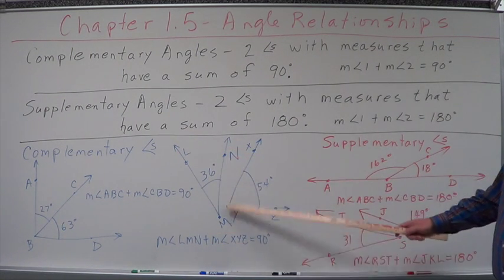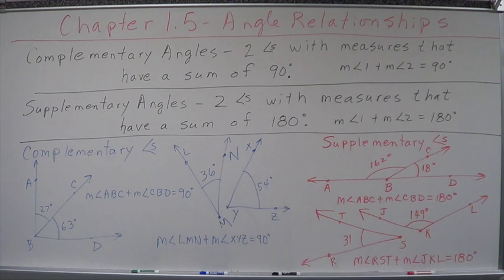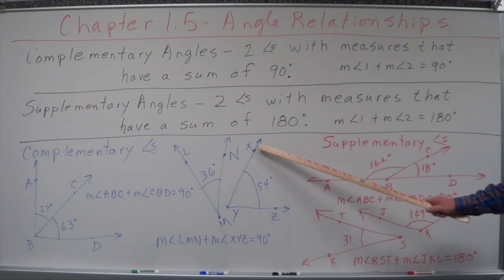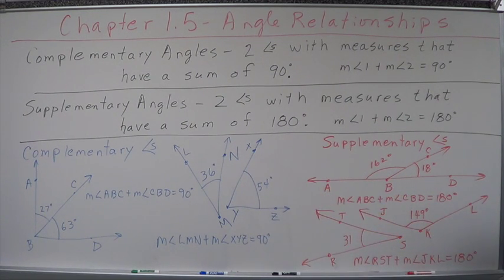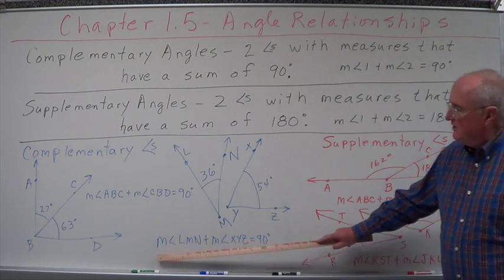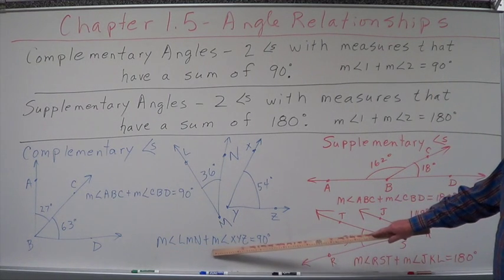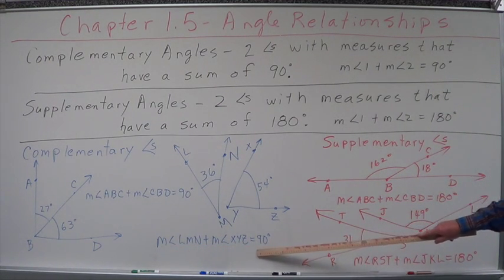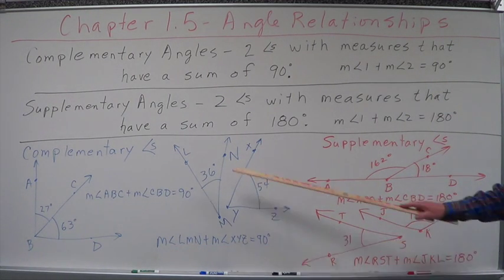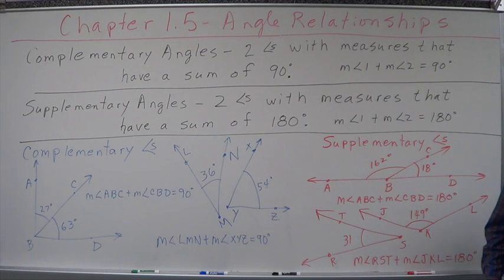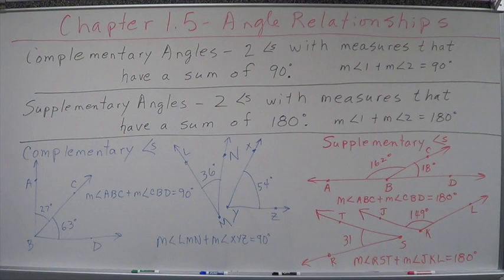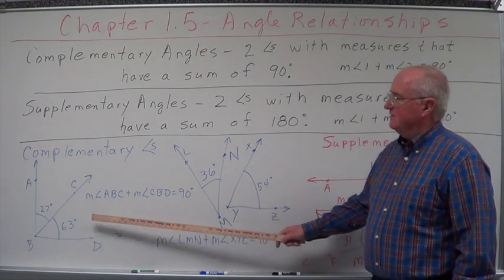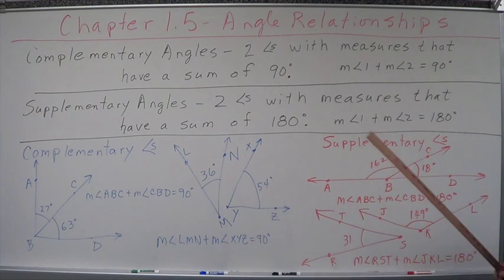Here we have angle LMN, which is 36 degrees, and angle XYZ, which is 54 degrees. When we add those two together, the measure of angle LMN plus the measure of angle XYZ equals 90. These two angles are complementary. Complementary angles can be adjacent, but they don't have to be — they can be separate.